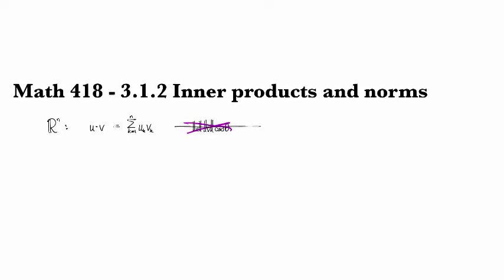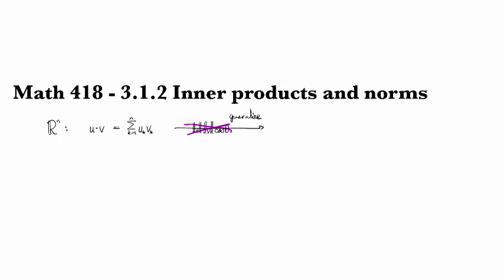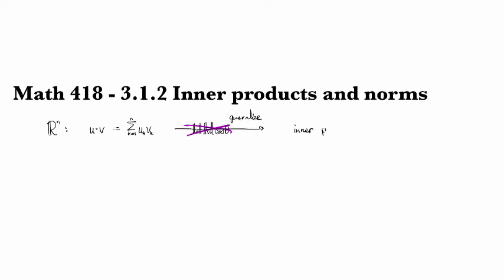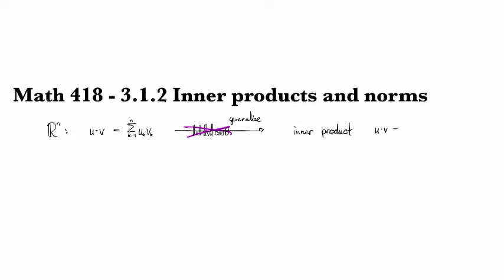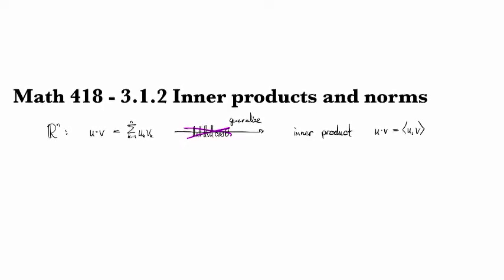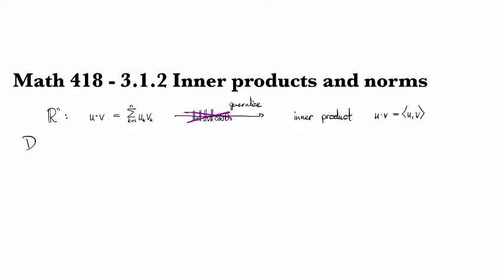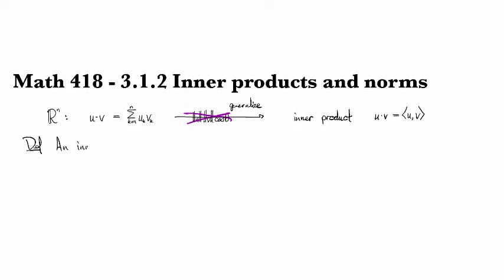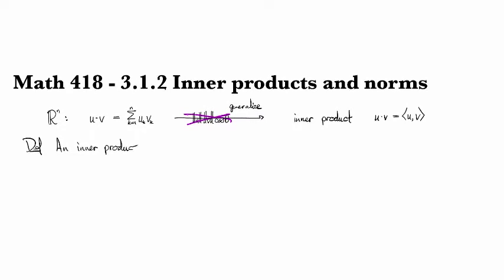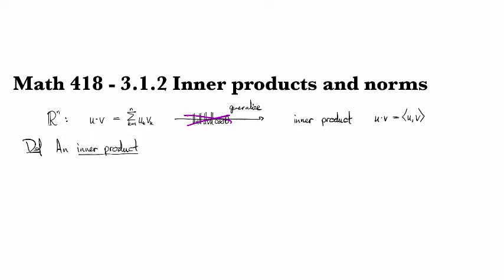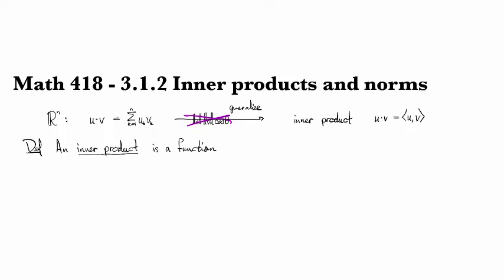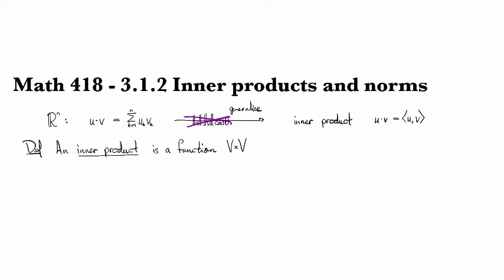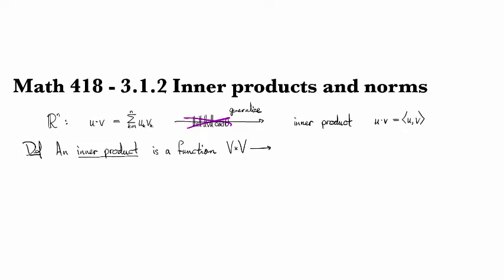What we want to do is we want to generalize this notion to other vector spaces where it is called an inner product. And instead of writing u dot v, typically it's written instead as u v in angle brackets. And so an inner product is a mapping or a function, and it takes a pair of elements of a vector space. So it's a function from v cross v, so pairs of elements of v, and it spits out a complex number.